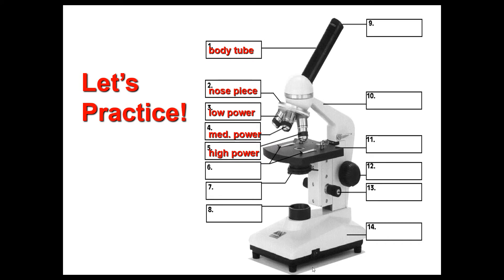Number six is the stage clips. Number seven is the diaphragm. Number eight is the light source. Number nine is the ocular lens or eyepiece. Number ten is the arm. Number eleven is the stage. Number twelve is the coarse adjustment knob — it lowers and raises the stage. Number thirteen is the fine adjustment knob. And number fourteen is the base.